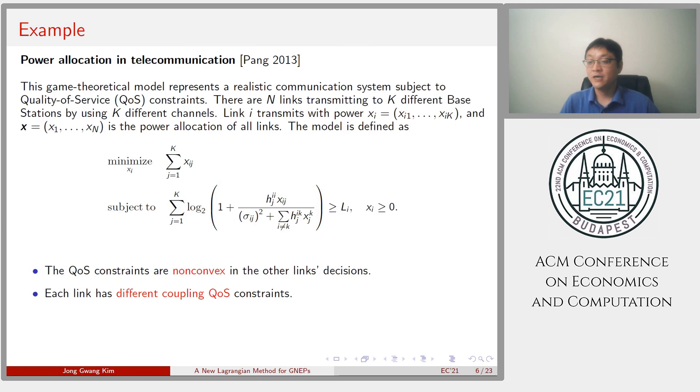Let's see an example of real problem. Power allocation in telecommunication. This model represents a realistic communication system subjected to quality of service constraints. There are L-links transmitting to k different base stations by using k different channels. Link i transmits with power x_i. In this model, we see that the quality of service constraints are non-convex in other links' decisions. And each link has different coupling constraints. Therefore, this problem can be viewed as a case of general GNEP.